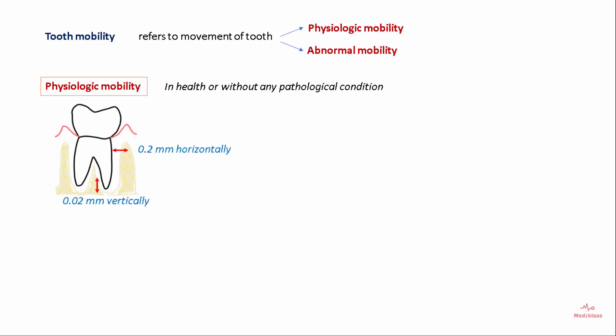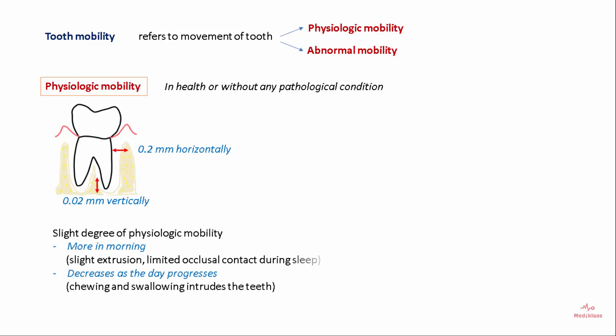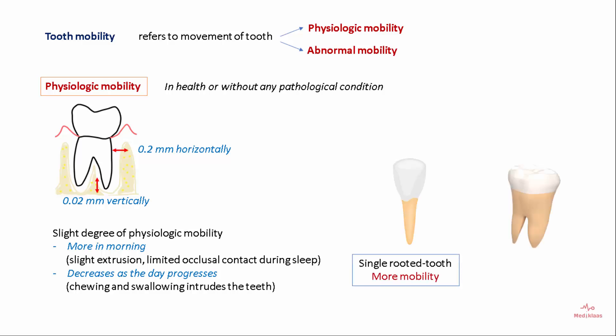The tooth can move 0.2 mm horizontally and 0.02 mm vertically. Physiologic mobility is seen to be more in the morning due to slight extrusion and limited occlusal contact during sleep. It decreases as the day progresses due to swallowing and chewing that intrudes the tooth. Physiologic mobility is seen more in single-rooted teeth compared to multi-rooted teeth.